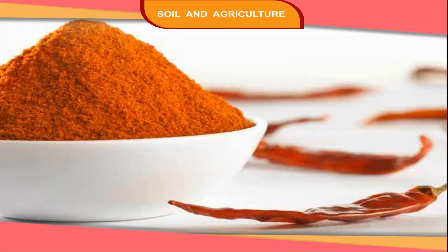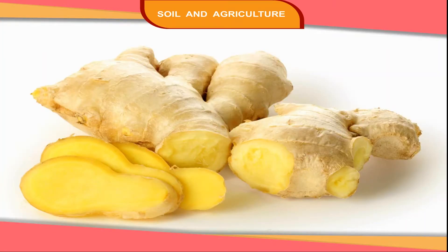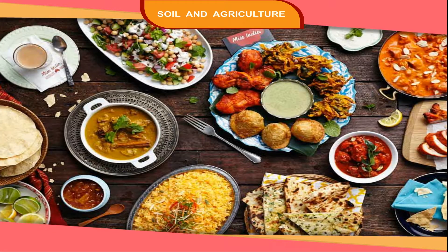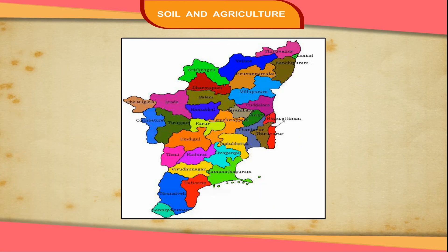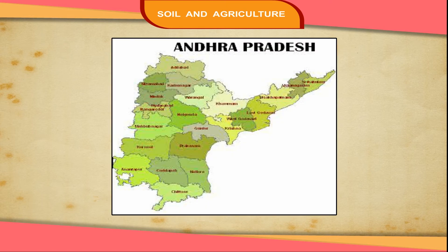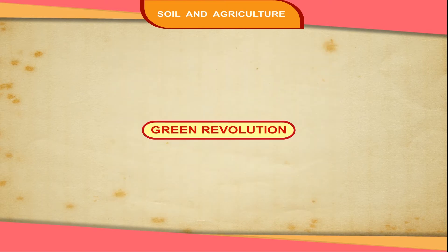India is famous for its spices like cardamom, cloves, black pepper, chilies and ginger. Spices make our food delicious. The main producers of spices are Kerala, Karnataka, Tamil Nadu and Andhra Pradesh.